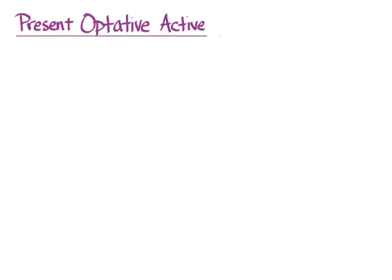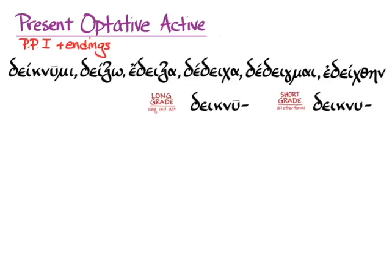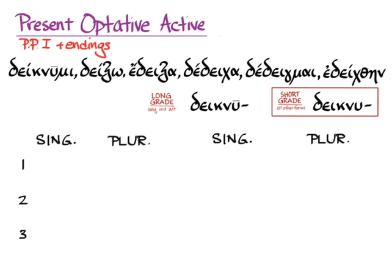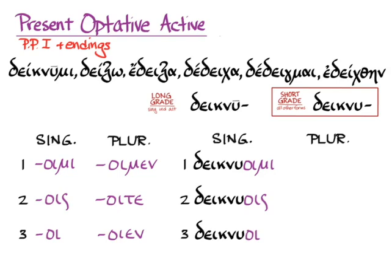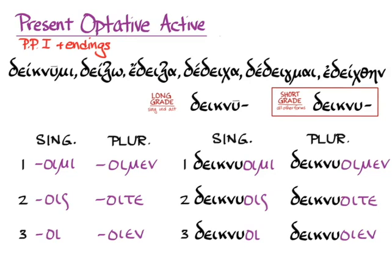In the optative, deiknumi is a little bit irregular — it's not going to follow the athematic rule. It uses the short-grade stem, but instead of the athematic optative endings (which combine with other stems to form diphthongs), that doesn't happen here. So we use the thematic optative endings learned from the very beginning: deiknuoimi, deiknuois, deiknuoi, deiknuoimen, deiknuoite, deiknuoien — thematic optative endings on an athematic verb, with recessive accent.